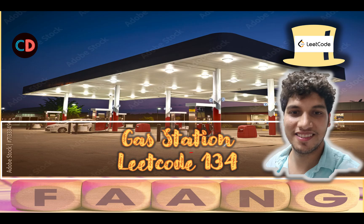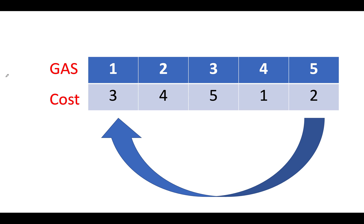Gas station LeetCode 134. It's a medium level question on LeetCode and I totally feel the same. So let's get started. Let's take the same example that was specified in the question. We have the gas array as 1, 2, 3, 4, 5. The cost associated as 3, 4, 5, 1, 2.